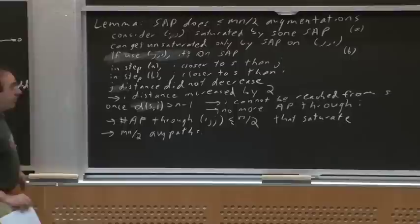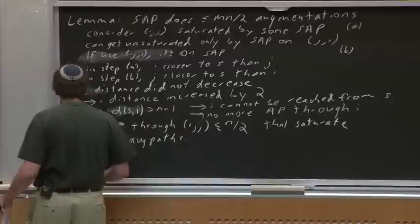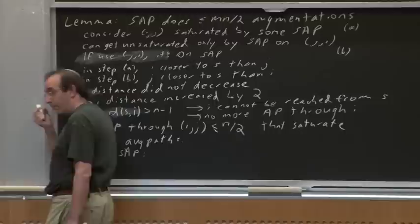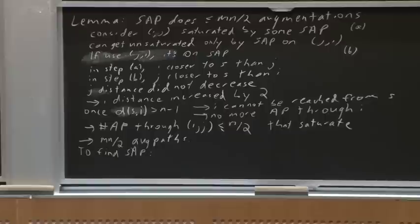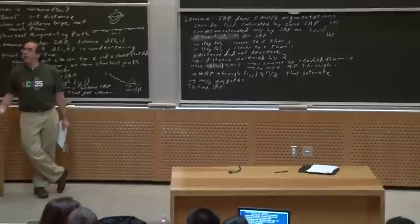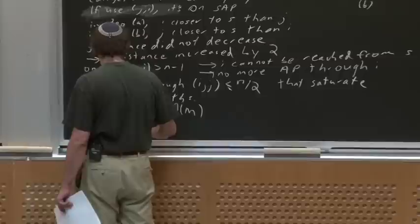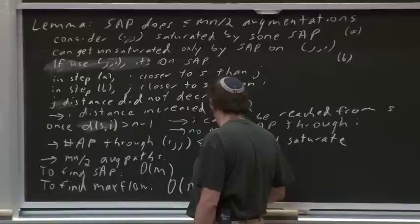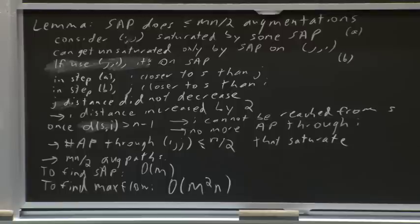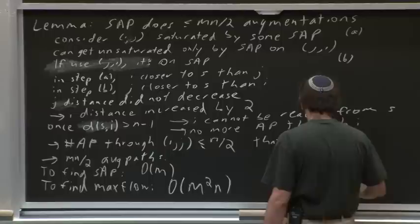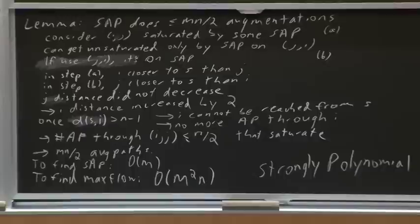Finding a shortest augmenting path takes order m time using BFS — there are no lengths here, just number of edges on the path. So finding a max flow takes order m squared n time, with no dependence whatsoever on the values of the capacities. This is a strongly polynomial algorithm — it performs a number of arithmetic operations depending only on the structure of the graph, not on the numbers being manipulated.